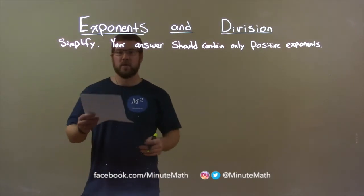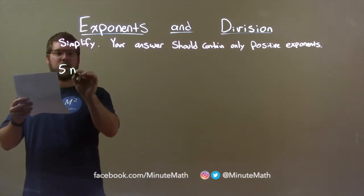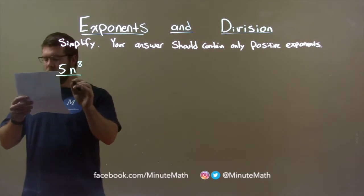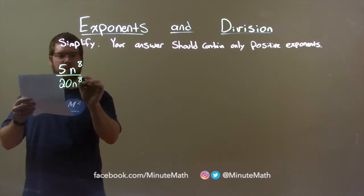So, I was given this problem: 5n to the 8th power over 20n to the 8th power.